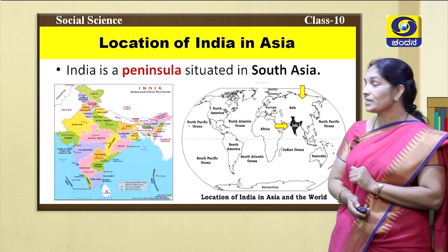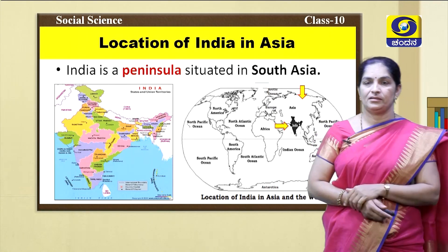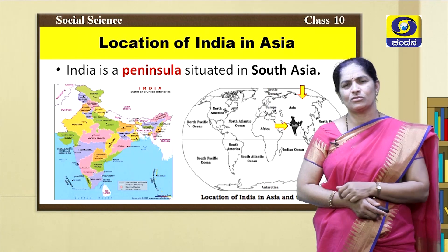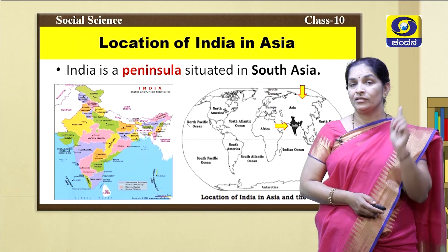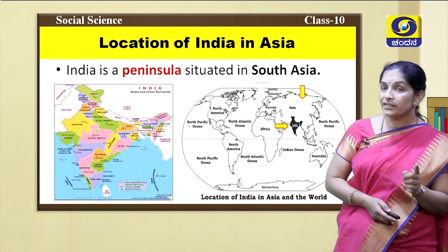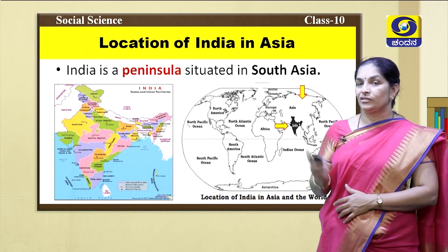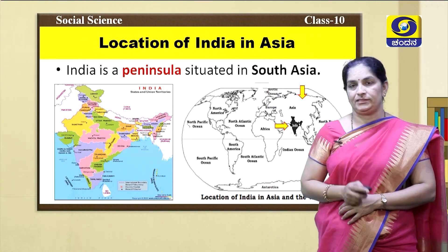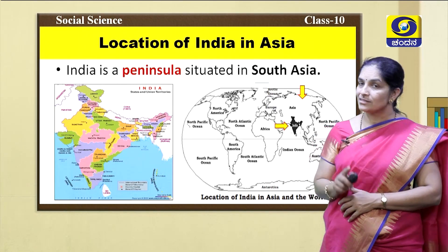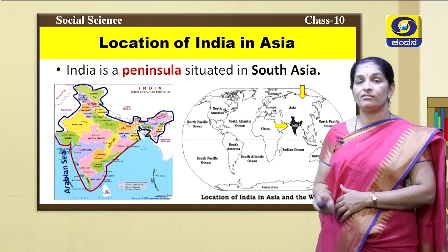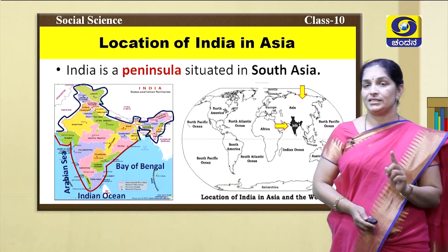India is a peninsula. Geographically, India is called a peninsula — Pariyaya Dvipa. What is a peninsula? A peninsula is a land which is covered by land on one side and water on three sides. India is a peninsula because India has a land border in the north, and water borders in the west, east, and south. India has the Arabian Sea in the west, the Bay of Bengal in the east, and the Indian Ocean in the south.